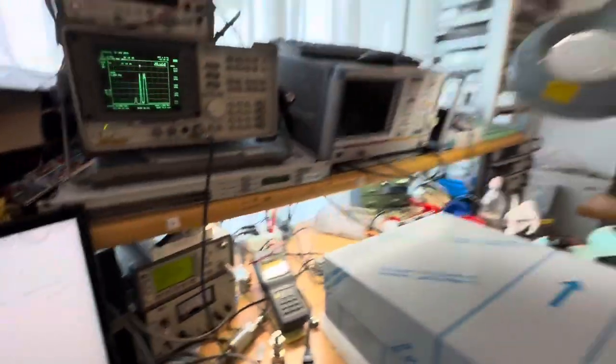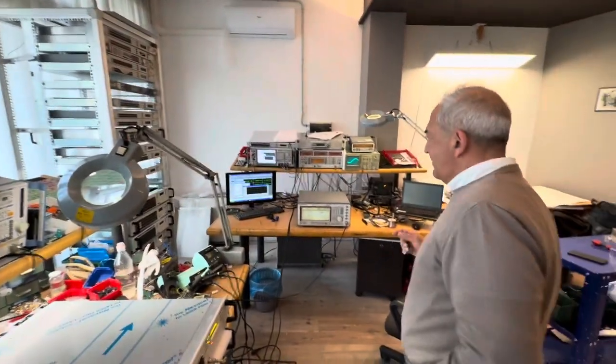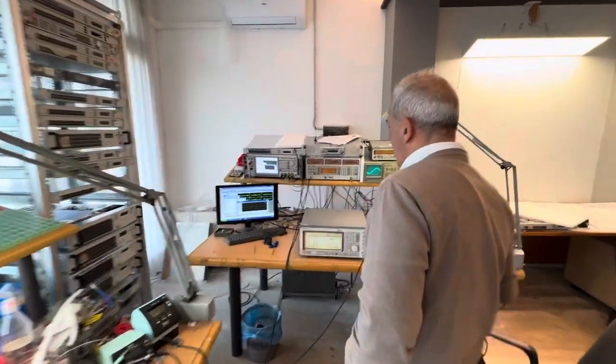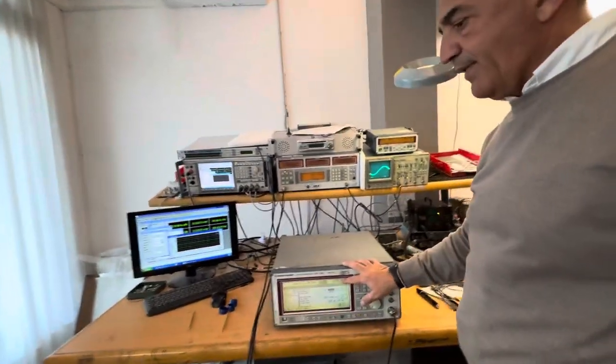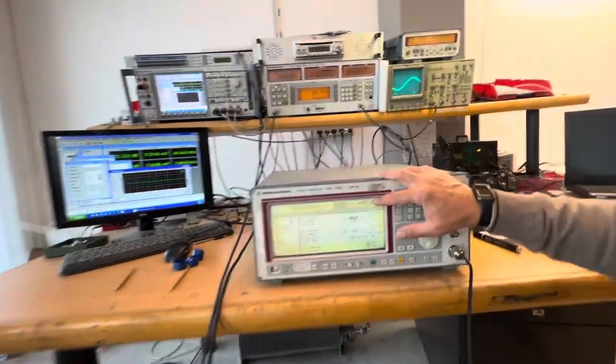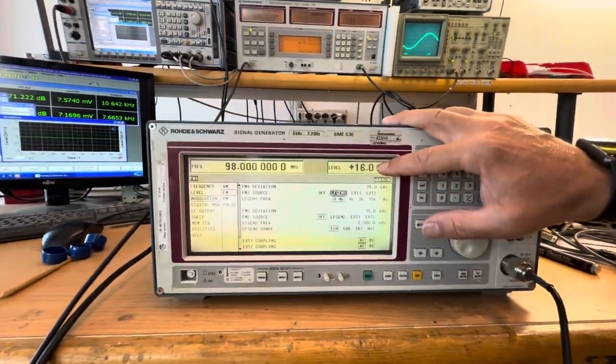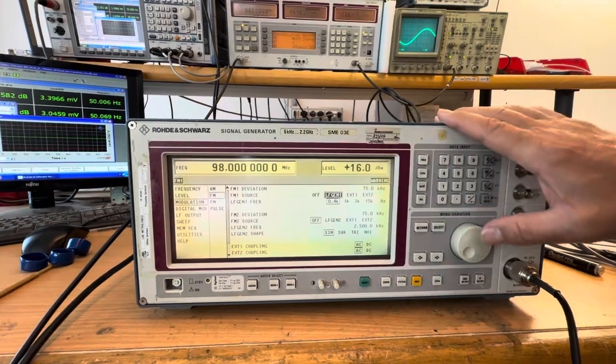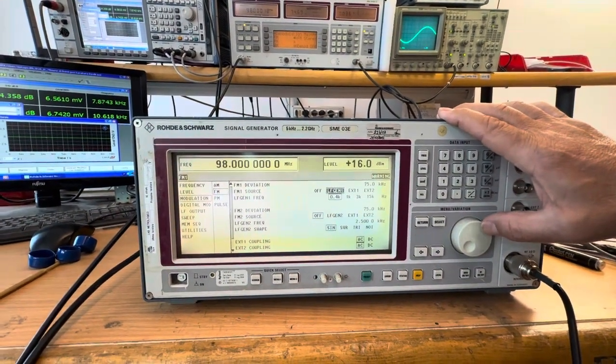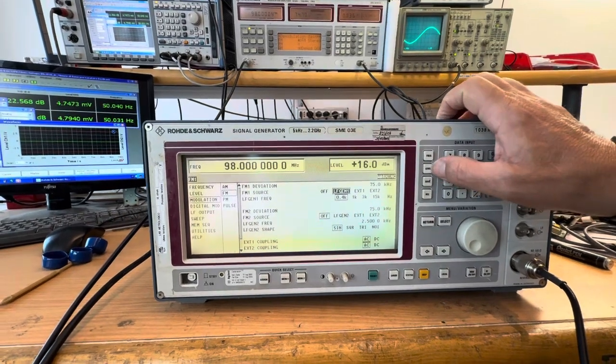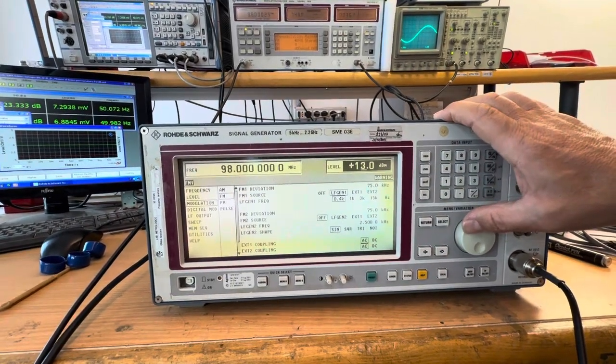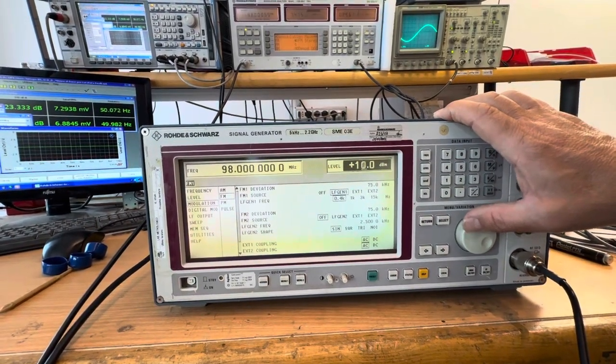Now I will decrease the output power to work in linear mode. When we need to work in linear, we need to decrease the output power of at least 6 dB. So I will go to level and just decrease it.